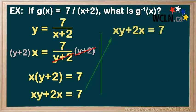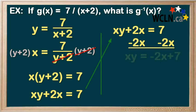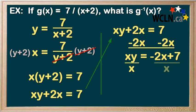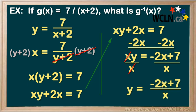Now, to get rid of the plus 2x, we subtract 2x. And whatever we do to one side, we do to the other. Continuing to get the y by itself — we're multiplying by x, so the opposite of that is to divide by x. And again, whatever we do to one side, we also do to the other. And this leaves the y by itself, so we have our answer.